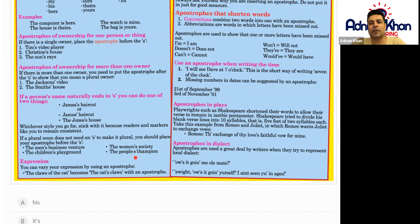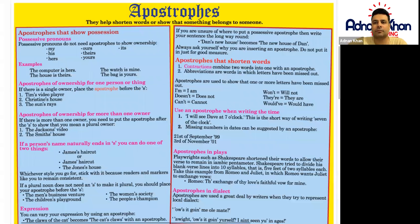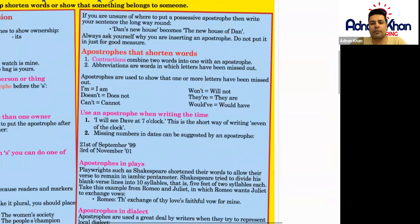You can vary your expression by using an apostrophe. For example, the claws of the cat becomes the cat's claws — the apostrophe goes before the S because there is one cat. If you're not sure where to put a possessive apostrophe, try writing the sentence the other way around. So Dan's new house becomes the new house of Dan, and you can restructure the sentence from there.